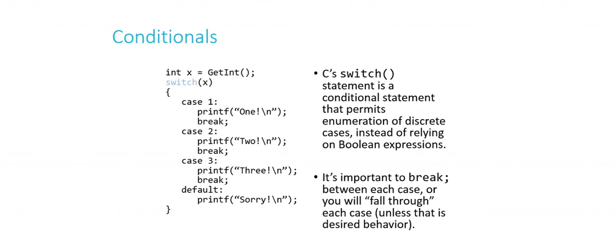Basically one get function for every data type that we've already discussed. So int x equals get int. Basically what's happening is I'm at the terminal, I'm asking the user to type in a number. And here I'm switching what I'm doing depending on what the user typed at the prompt. So if they typed 1, I print out 1 and then I break. If they typed 2, I print out 2 and then I break.